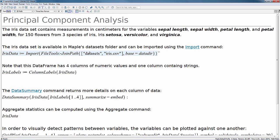Now more about our dataset. The iris dataset contains measurements in centimeters for the variables sepal length, sepal width, petal length, and petal width for 150 flowers from three species of iris. The iris dataset is available in Maple's datasets folder and can be imported using the import command.